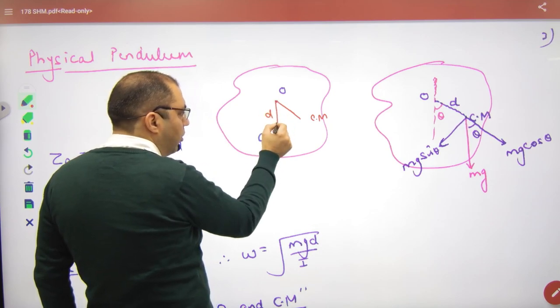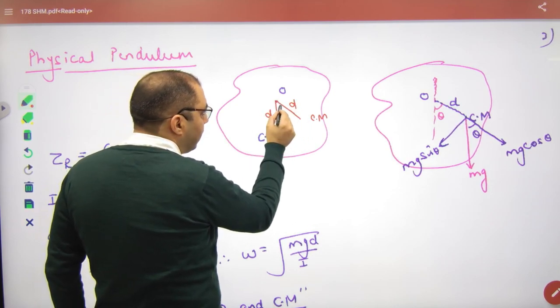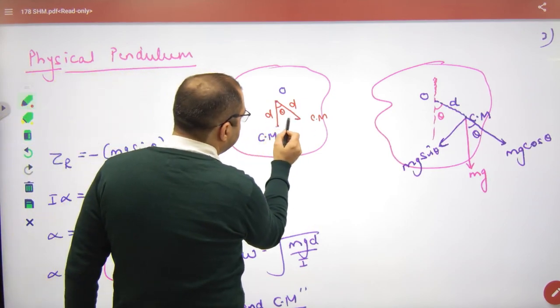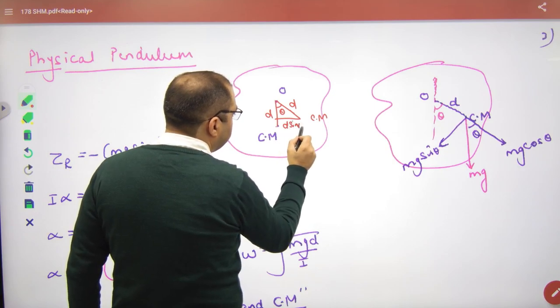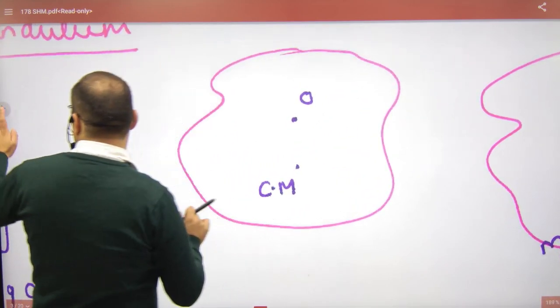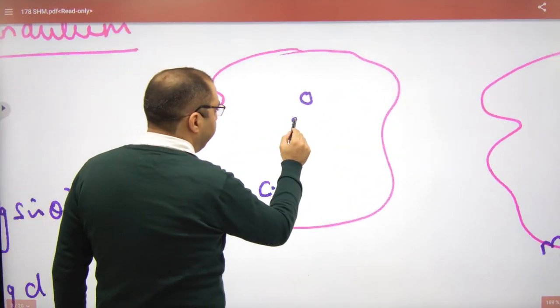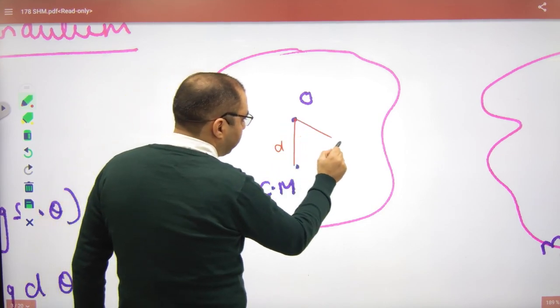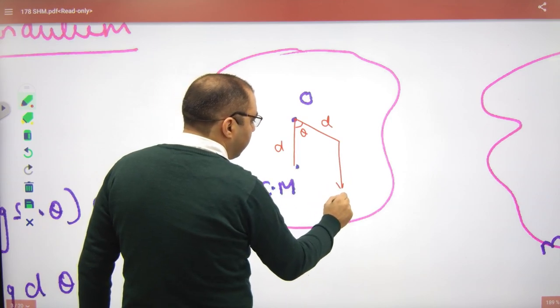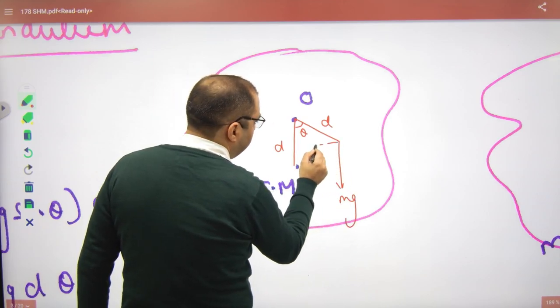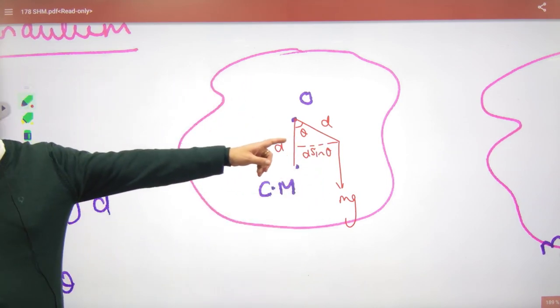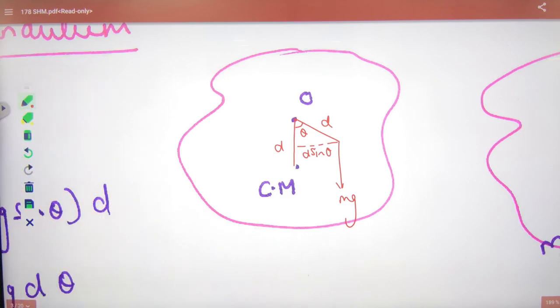And you have to rotate it by angle theta. So this distance, what will happen? d sin theta. So what will happen? This angle theta - please make a diagram. What is mg? So what will happen? d sin theta - please make a diagram. Don't follow that, it's easy to create this in the book.